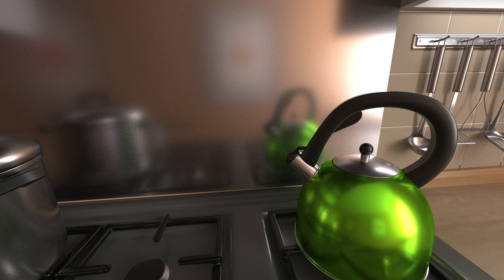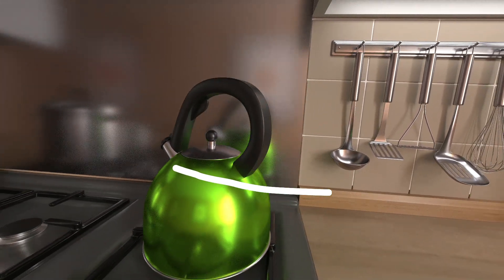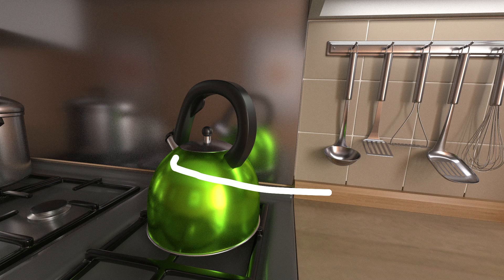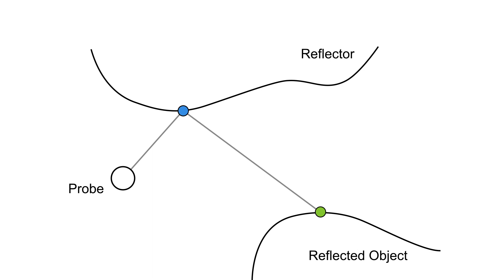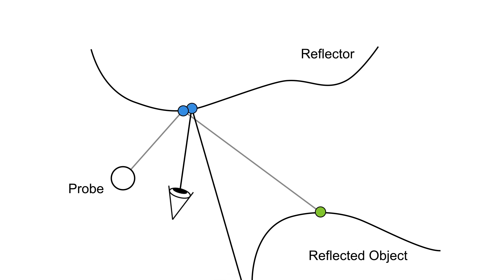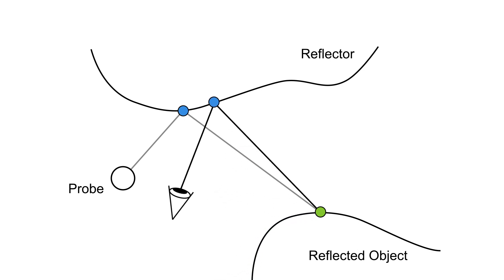Using pre-computed probe information to render a novel view requires an accurate estimation of how reflections move when the viewpoint changes. This is a challenging task, in particular for curved reflectors. Consider the setting: the probe observes the blue point, which is the reflection of the green point. When rendering a novel view, we need to find a new location on the reflector such that its reflection remains the green point. We solve this problem in two steps.